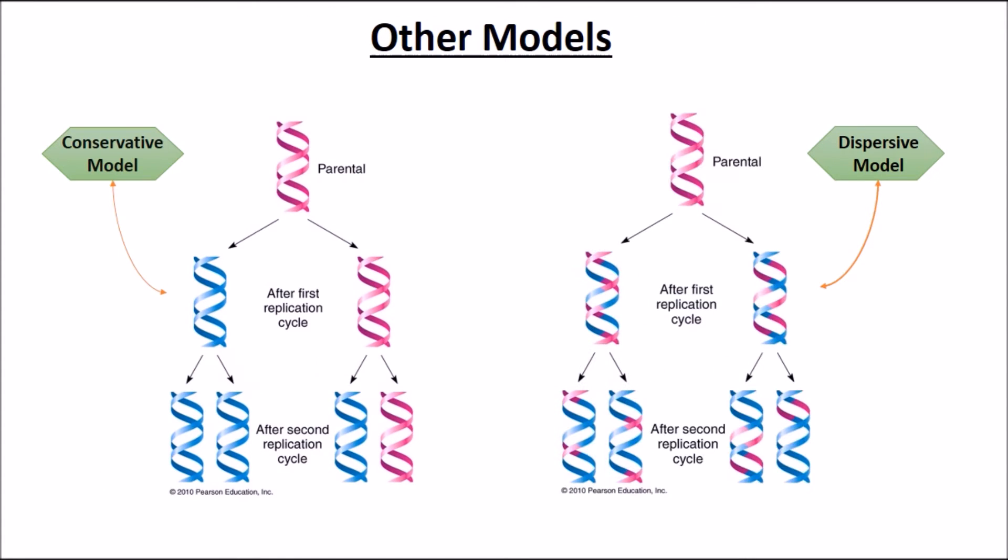The conservative model and the dispersive model were both old models that were thought to be accurate. However, these were proven to be false by the Meselson-Stahl experiment. The conservative model showed that the old DNA strand was saved, meaning the replicate of the DNA did not contain any of the old DNA strand, while the dispersive model showed that various sizes of old and new DNA strands mixed together.